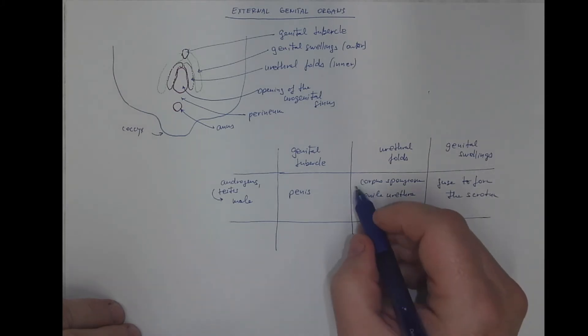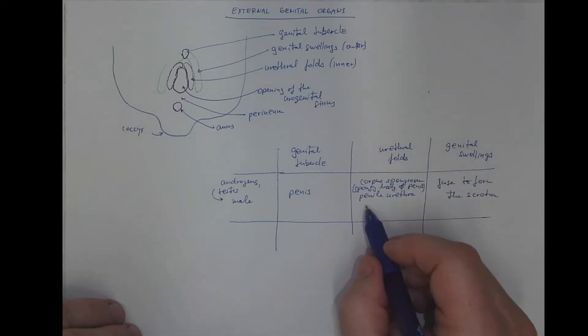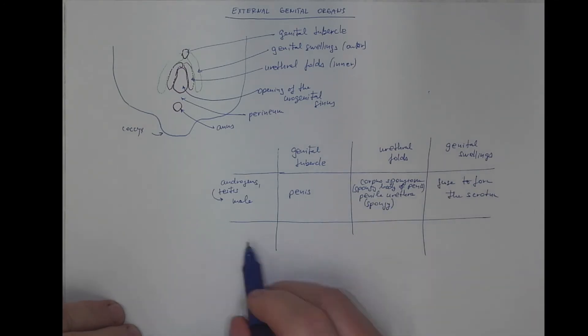The corpus spongiosum is the spongy body of the penis, in other words, and the penile spongy urethra.